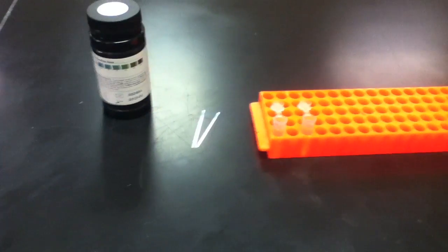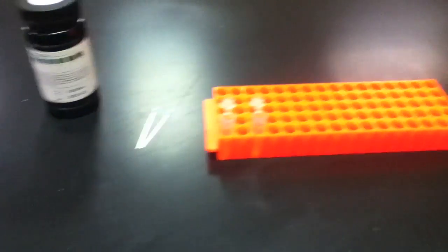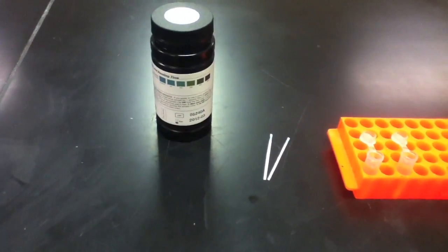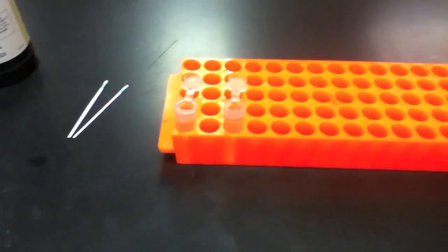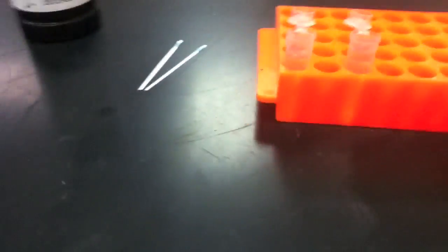Similar to the pH test strips that you used that determine pH based upon a colorimetric scale, we can also use glucose test strips to determine the amount of glucose that exists inside of a solution.